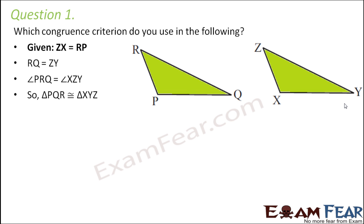Which congruence criteria do you use in the following? So here it says that ZX is equal to RP. So this side is equal. RQ is equal to ZY. So RQ, that is this side, is equal to ZY, which is this side. Angle PRQ, this angle is equal to angle XZY. So XZY, that is this angle. So this is also equal. So therefore these two triangles are congruent. So this is as per which criteria?